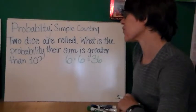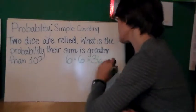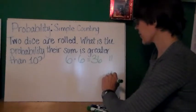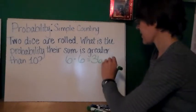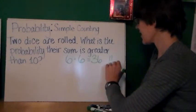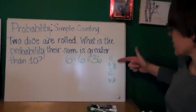my sample space is 36. That their sum is greater than 10. Well, that means that they have to add up to either 11 or 12. 12, there's only one way. They both have to be six. For 11, you could have five and six or six and five. So all together, that's three different ways.